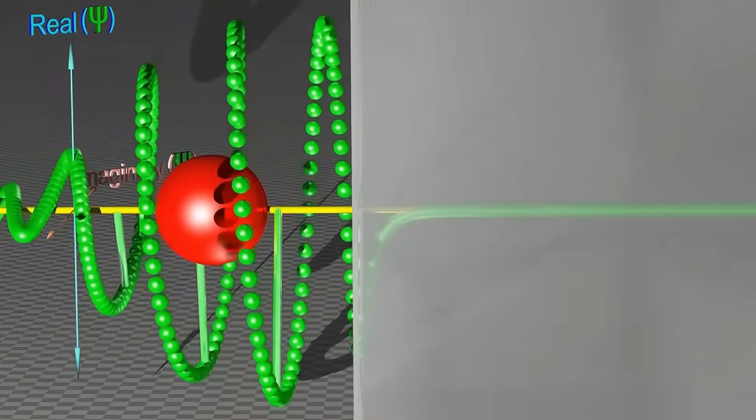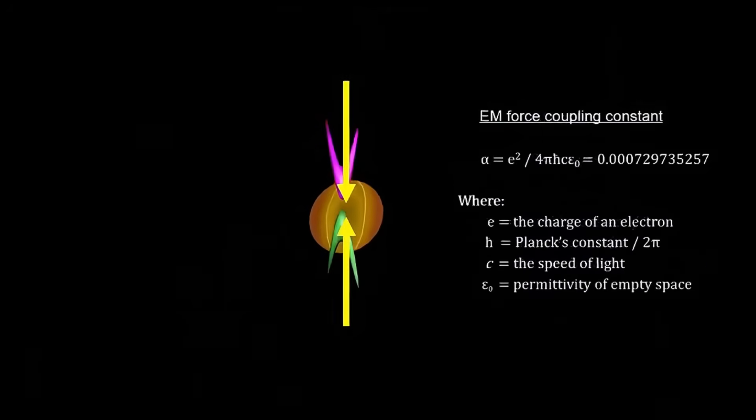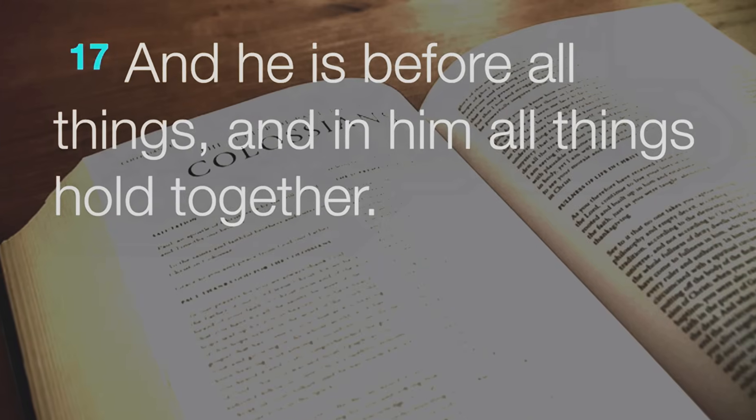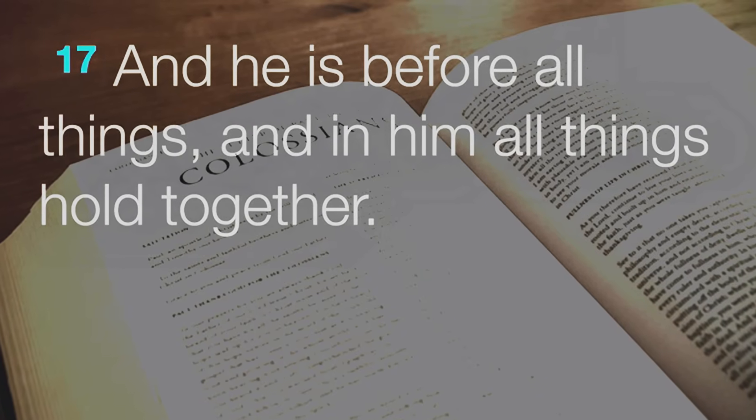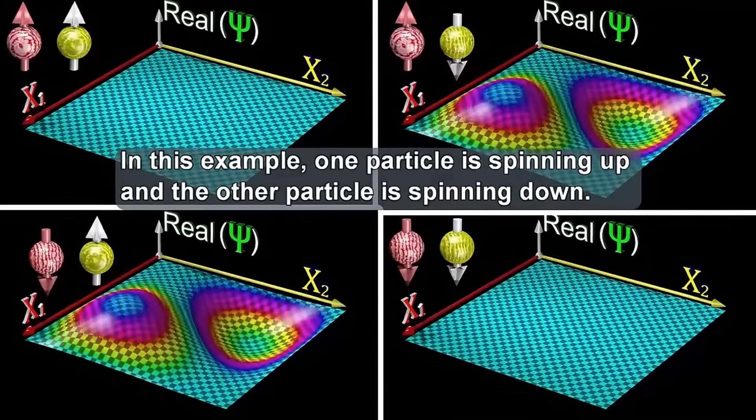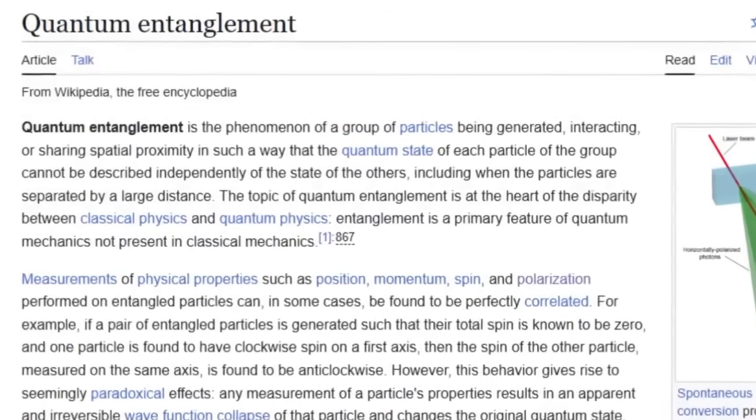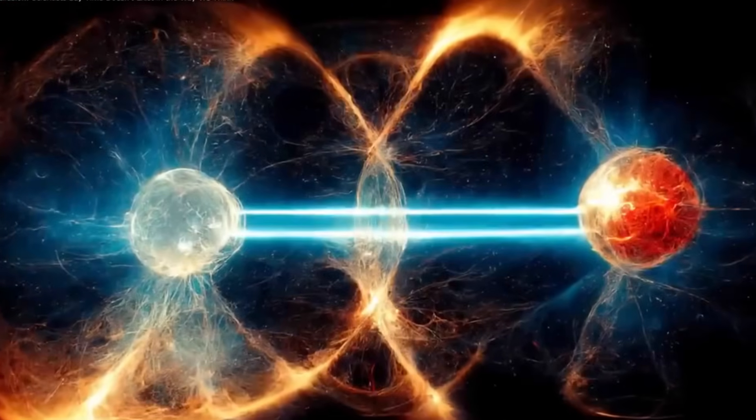Proverbs 25:2 declares, it is the glory of God to conceal a matter. To search out a matter is the glory of kings. This suggests that reality hides secrets and discovery is a noble pursuit. In quantum research, scientists unveil hidden layers of reality—probability amplitudes, wave functions, quantum fields. They peer into realms that defy everyday intuition. Could scripture be inviting us to the same exploration?